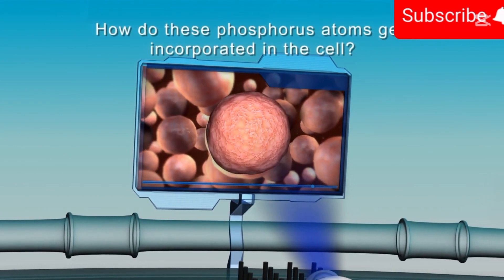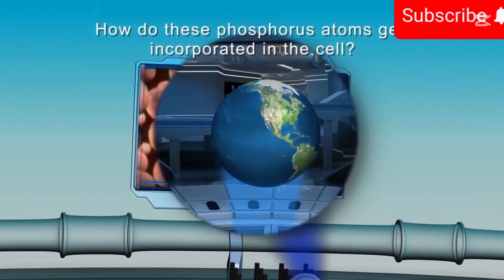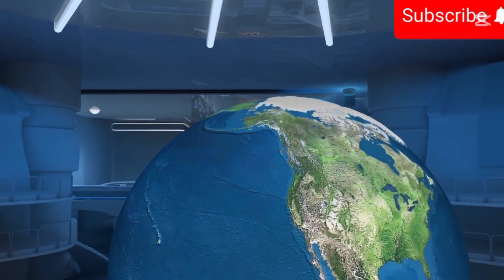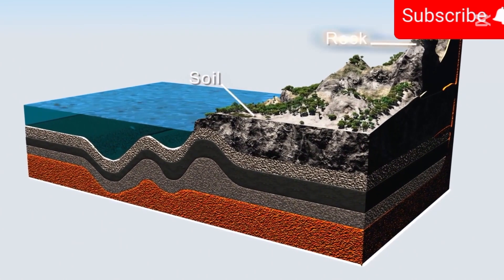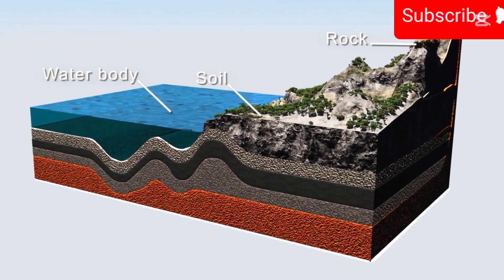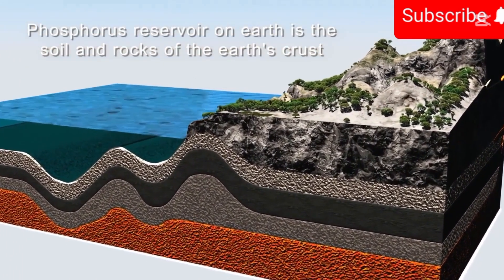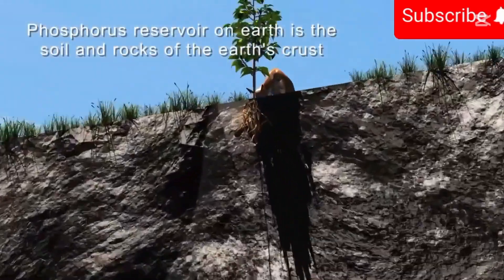How do these phosphorus atoms get incorporated in the cell? To understand this, let us take a look at the section of the biosphere. In nature, phosphorus is found in the soil, rock, and water bodies. The main phosphorus reservoir on earth is the soil and rocks of the earth's crust.